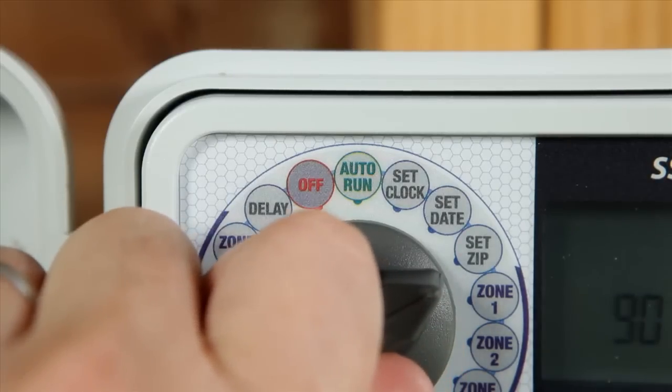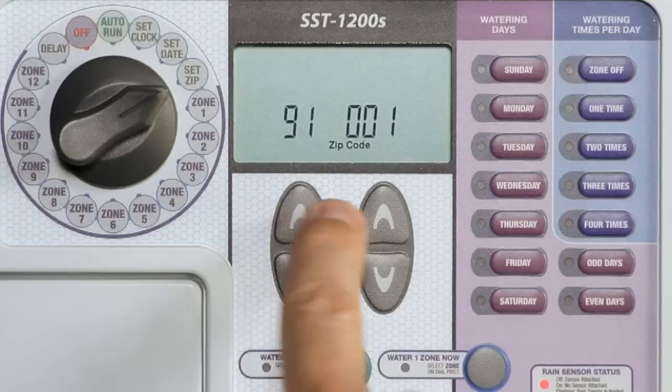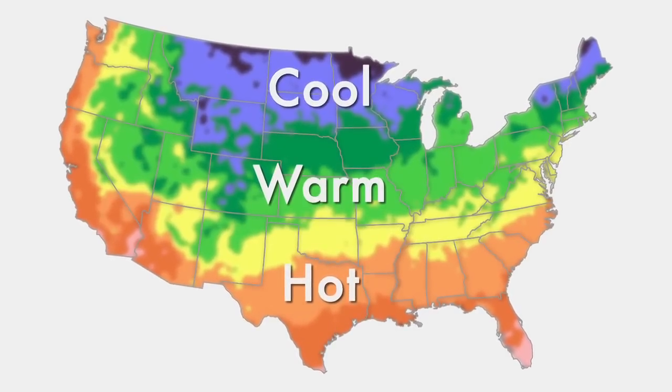Next, turn the dial to the set zip marking. Use the left and right up down arrow keys to set your zip code. This lets the controller automatically adjust watering throughout the year for typical weather conditions in your area.